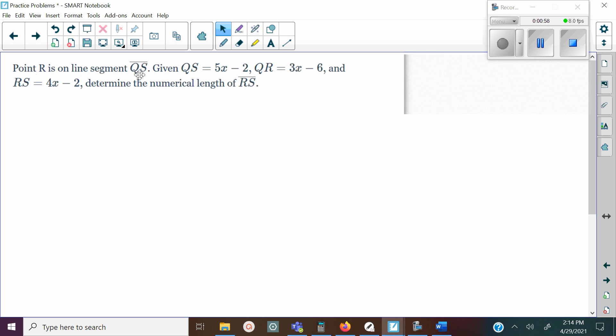We're going to start off with the first part. Point R is on line segment QS, so the best way to do this is get a visual look at it. You're going to draw a line segment QS and then put R in the middle of that line segment.